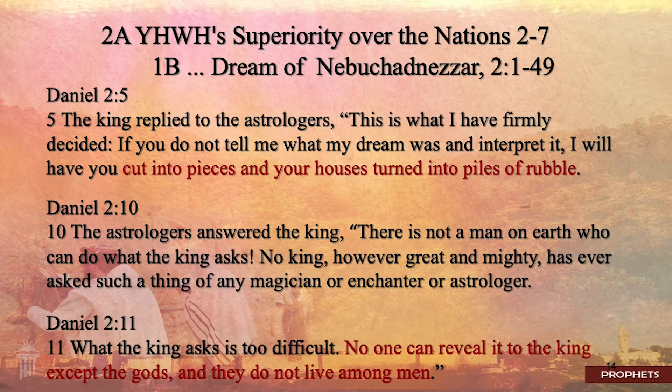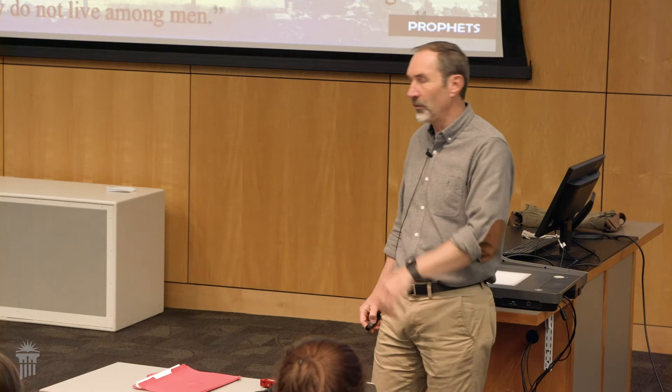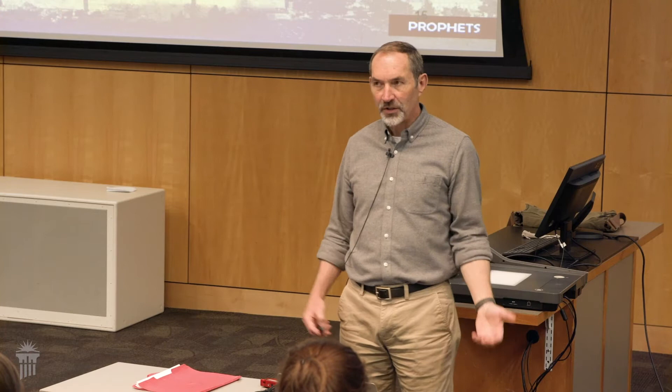The king says no — I'm not going to tell you the dream because I don't trust you. You tell me what dream I had, and then I'll know if your interpretation is valid. And if you don't, you'll be cut in pieces and your houses turned into piles of rubble. The astrologers say there's not a man on earth who can do this — nobody can reveal it except the gods, and they don't live among men. So the king says off with all of them, let's kill all of them. The message gets to Daniel, and Daniel says hold on, I can answer this. He says: no wise man, enchanter, magician, or diviner can explain this to the king — but there is a God in heaven who reveals mysteries.